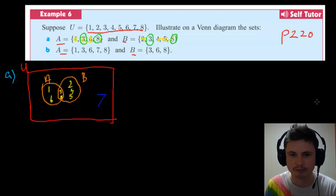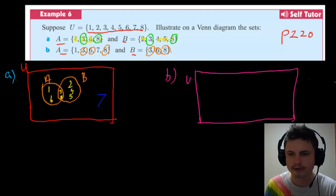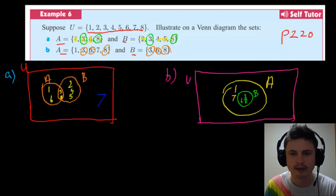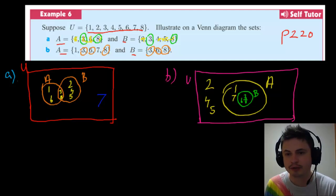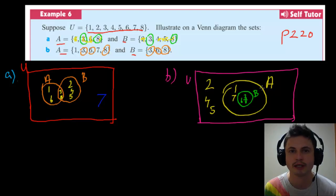For part b, the universal set has two circles again. Set A is {1, 3, 6, 7, 8} and set B is {3, 6, 8}, so 3, 6, and 8 are all intersecting. Since B's numbers are all inside A, A is a bigger circle on the outside and B is a smaller circle inside. Inside B we have 3, 6, and 8. Inside A but outside B we have 1 and 7. Outside both circles we have 2, 4, and 5. That's the answer to part b — and that's how you do Venn diagrams. Thank you for watching and good luck!